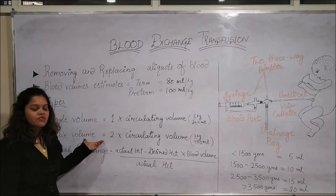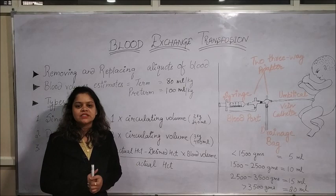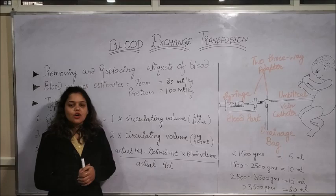Double volume exchange transfusion is the most common type used for hyperbilirubinemia, and it is successful in reducing 50% of serum bilirubin level after the procedure. However, there are chances of rebounding of serum bilirubin levels after 4 hours, so after the procedure, the baby should be placed under phototherapy.